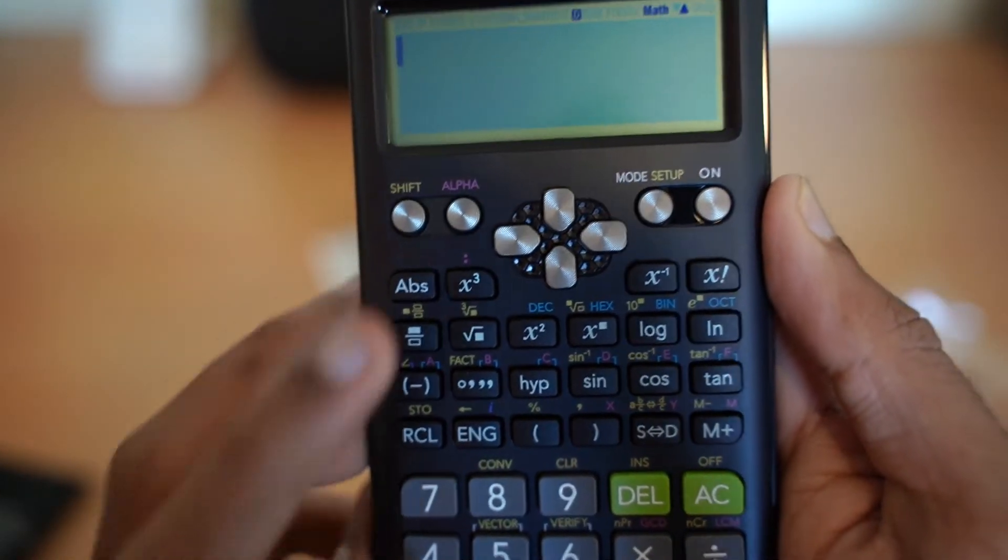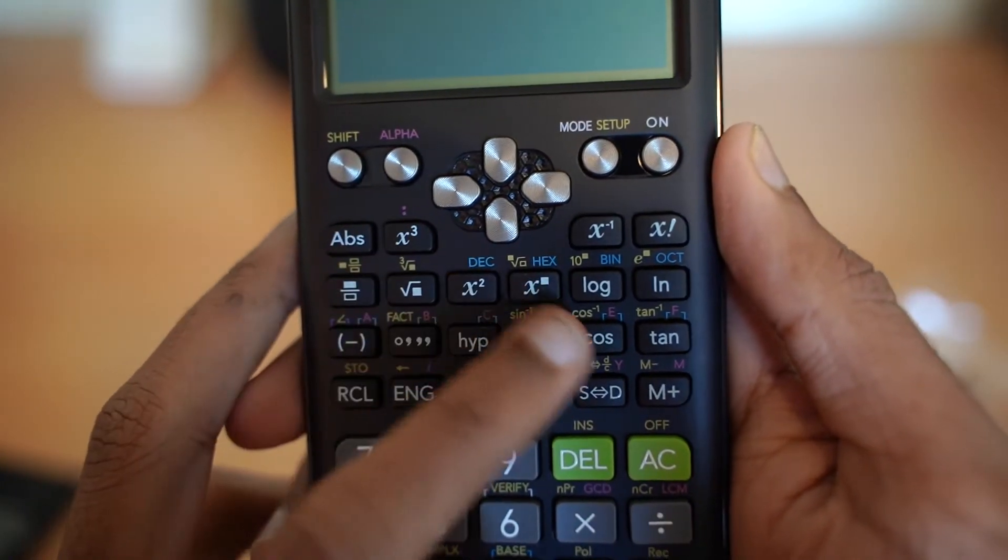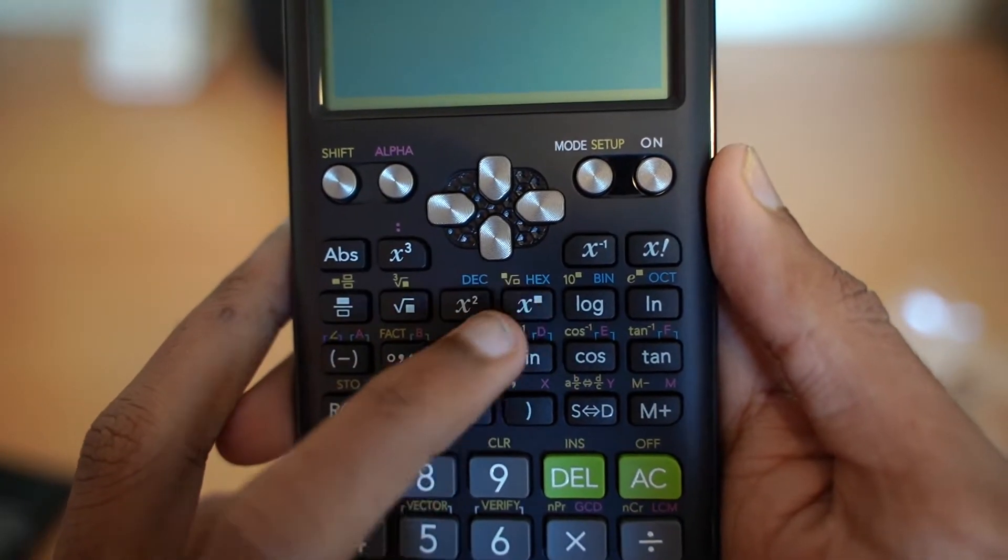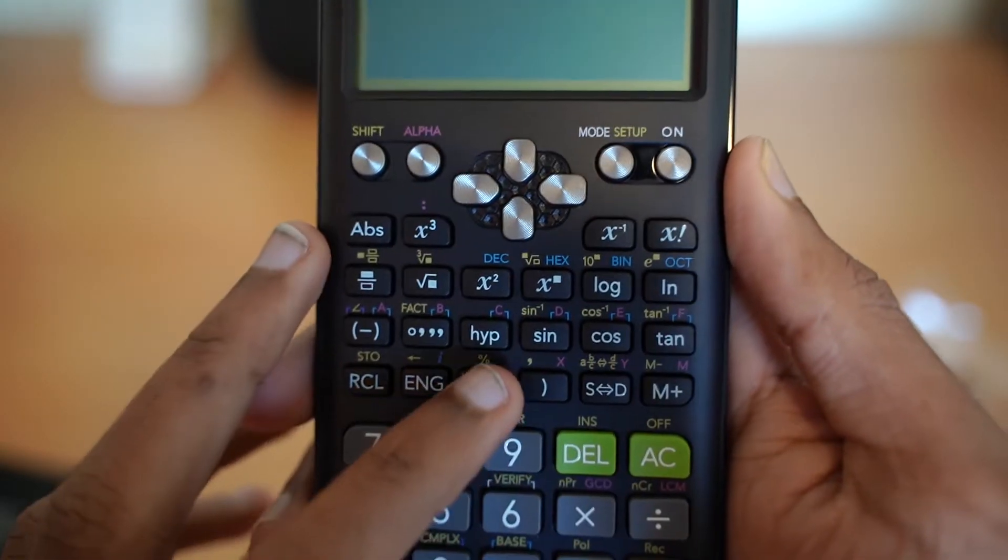For example, there is x3 dedicated button. X squared. There is xr. Then there is log ln and everything.